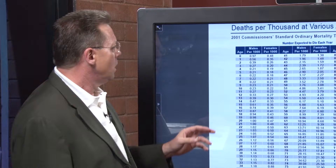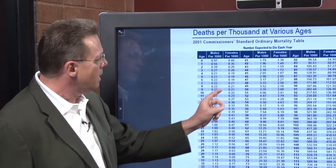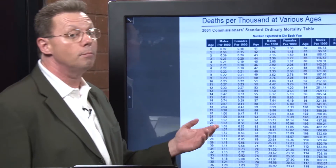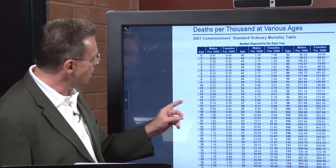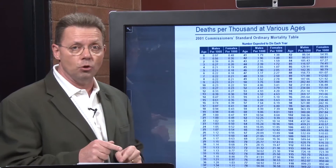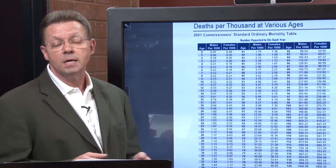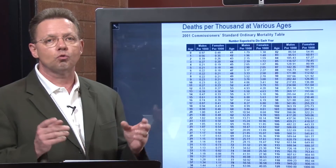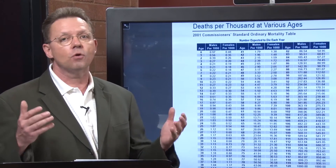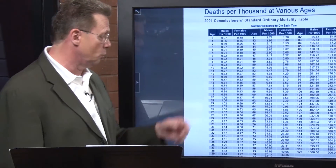They break it down by male and female and the per thousand who are going to die per thousand in America, all the way out to age 120, which is pretty much the standard boilerplate for most endowing and maturity dates of contracts. This is inside our life manual — you can order it by writing us at thebiz@brokersalliance.com and saying you want the life insurance manual. It comes with a nice vocabulary and all the statistics and paperwork we discuss are already documented in it.